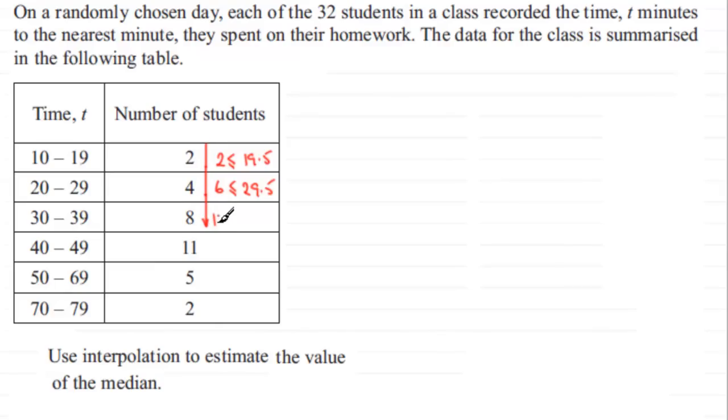14 values then are less than or equal to 39.5, remember we're measuring to the nearest minute. If I carry on a bit further down and take another 11, that's going to bring me up to 25. So 25 values are less than or equal to 49.5.